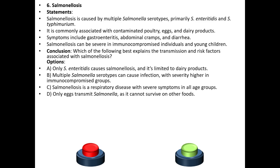Sixth question: Salmonellosis. Statements: Salmonellosis is caused by multiple Salmonella serotypes, primarily Salmonella enteritidis and Salmonella typhimurium. It is commonly associated with contaminated poultry, eggs, and dairy products. Symptoms include gastroenteritis, abdominal cramps, and diarrhea. Salmonellosis can be severe in immunocompromised individuals and young children.